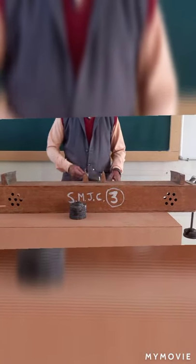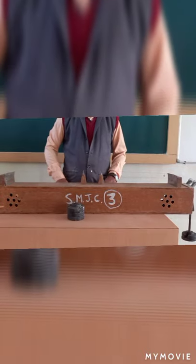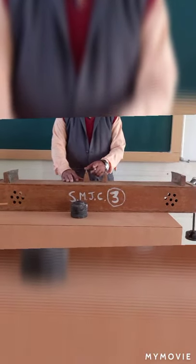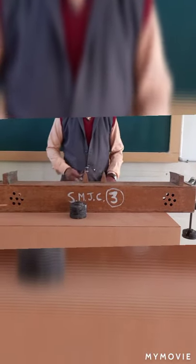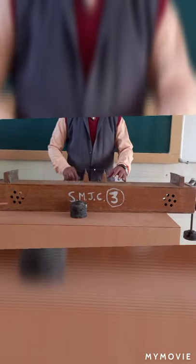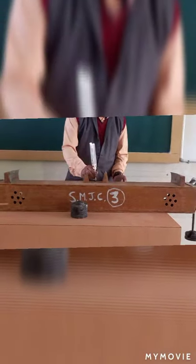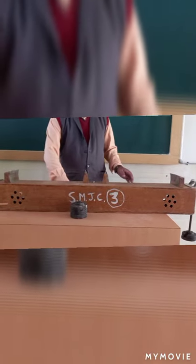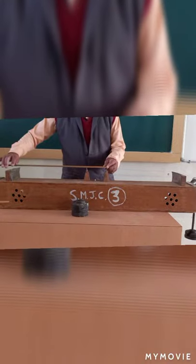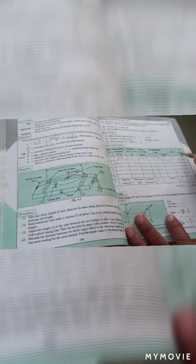Precaution: the rider should be exactly at the center — the midpoint, midway between the bridges. Once the rider falls down, measure the length with the help of a scale. It is around 10, so the vibrating length L = 10. L² = 10² = 100. T upon L² = 98 × 10⁴ ÷ 100 = 98 × 10² dynes per cm².